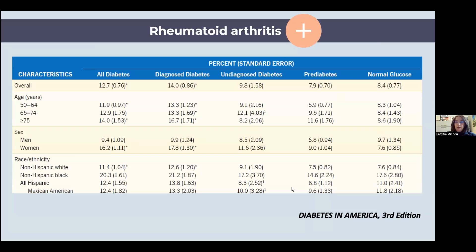There is also an association with rheumatoid arthritis, which is more an inflammatory condition. The prevalence of rheumatoid arthritis is increased in people with any kind of diabetes, especially with aging, in women, and in non-Hispanic Caucasian people. These diseases can be seen together more than expected.